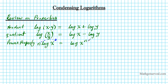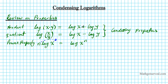In today's examples, we're going to be going from the expanded form and condensing it — moving backwards. I normally call the product and quotient properties my condensing properties. When you're going from right to left, you're condensing; from left to right, you're expanding.